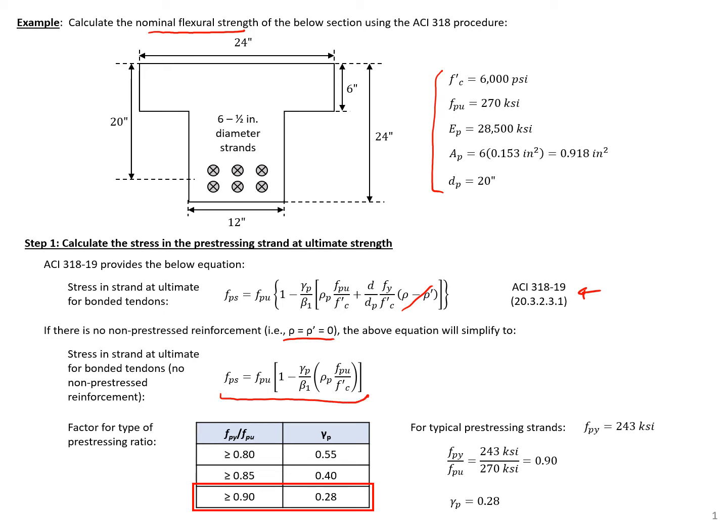Some of the terms that we'll need: we'll need a gamma sub p factor, which is a factor for the type of prestressing that we have. Here we need to calculate the ratio of our yield strength to the ultimate strength for our prestressing, which is typically going to be 0.9 or higher. So we'll typically have a gamma sub p factor of 0.28.